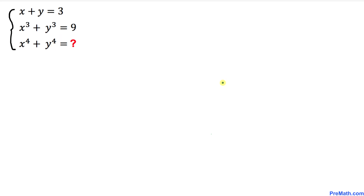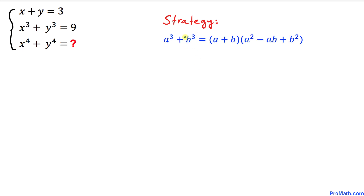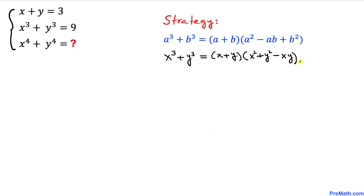Let's get started with the solution. Here's our action plan. Let's recall the sum of two cubes formula: a plus b times a squared minus ab plus b squared. We can write this formula in terms of x and y variables, where x cubed plus y cubed equals 9 and x plus y equals 3.